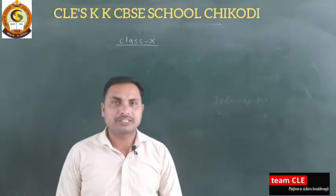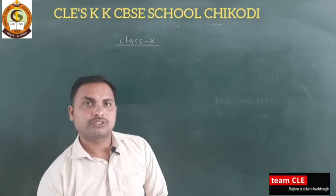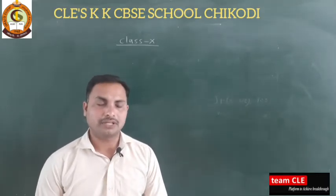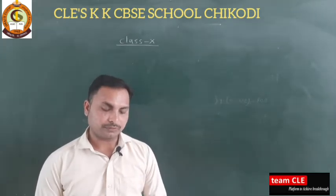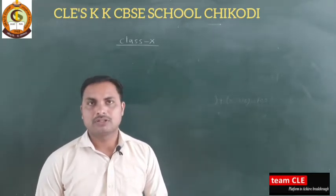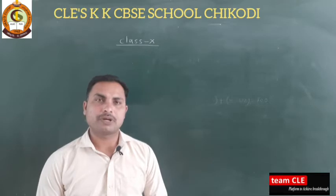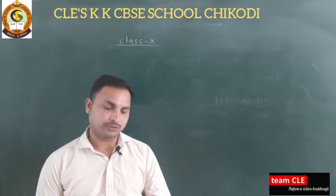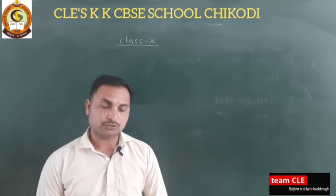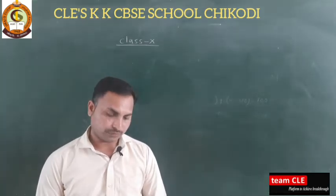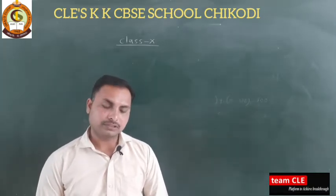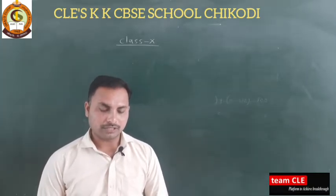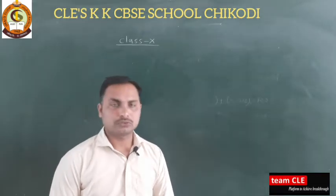Hello students, welcome back to the mathematics class. Today I would like to discuss exercise 1.3, question number 11. The question is: if the sum of the first n terms of an AP is 4n minus n², what is the first term, the sum of the first two terms, the second term, and similarly find the third, tenth, and nth term.